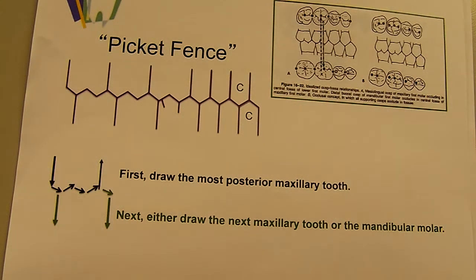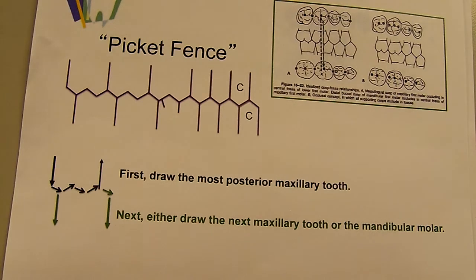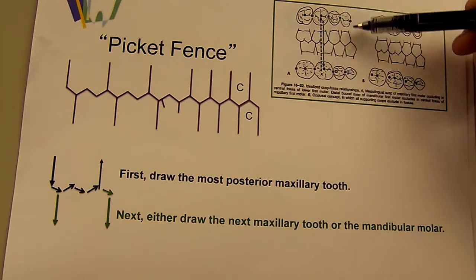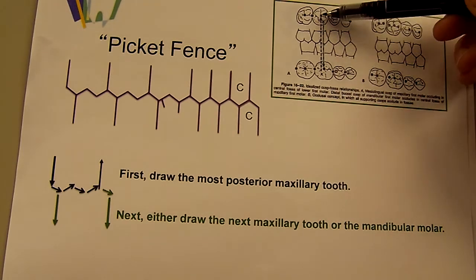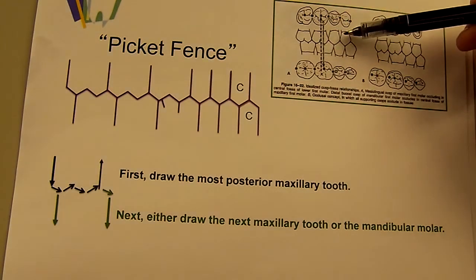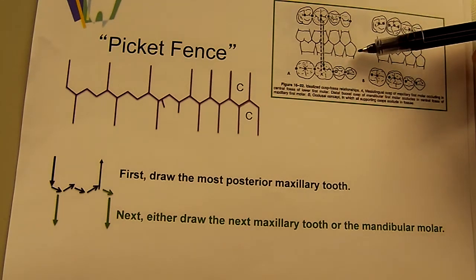Using the picket fence. If you were asked where the distal buccal cusp of the mandibular second molar occludes, you could either memorize it from a picture such as this with the dots, because each dot has a corresponding dot from the articulating paper from where the teeth occlude.